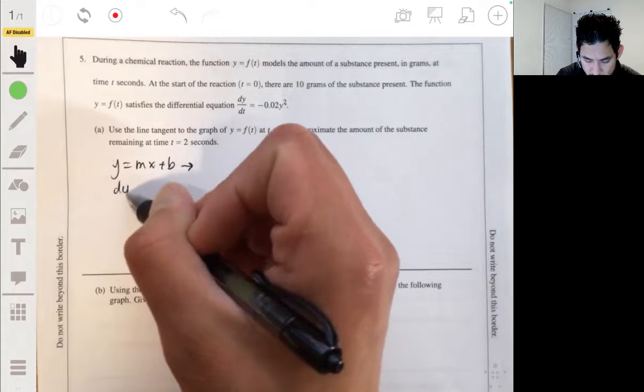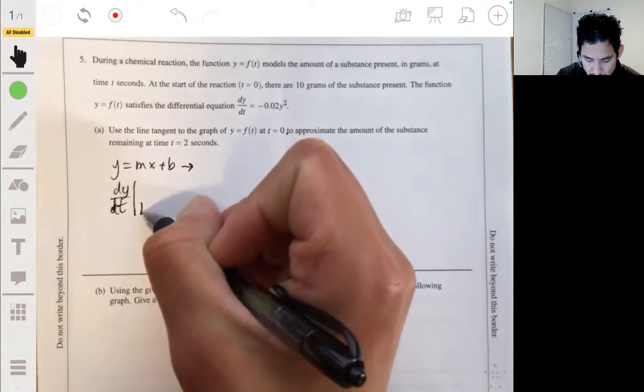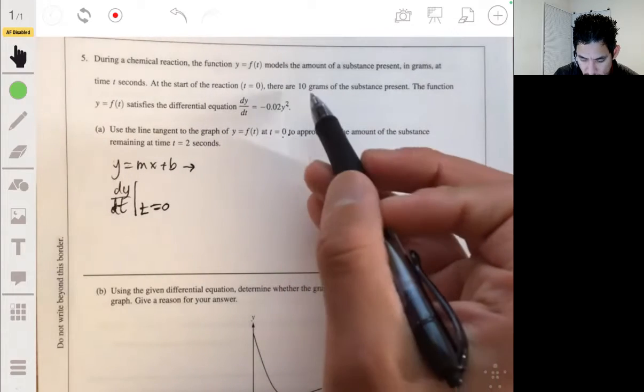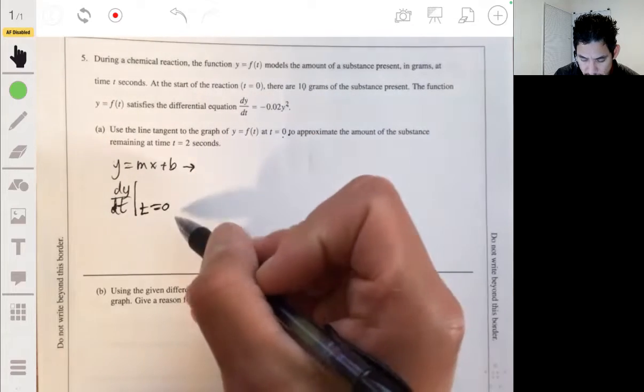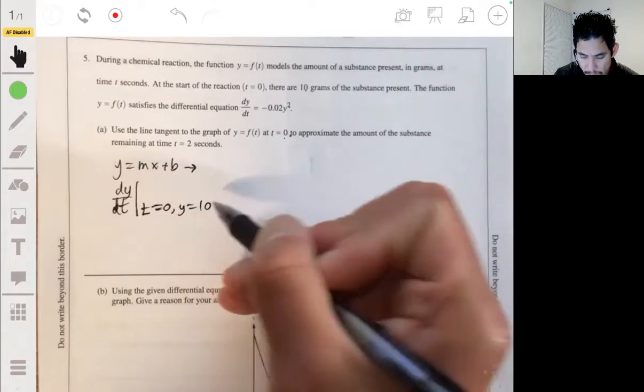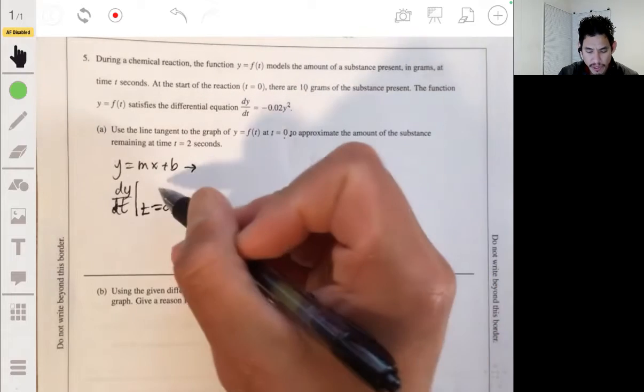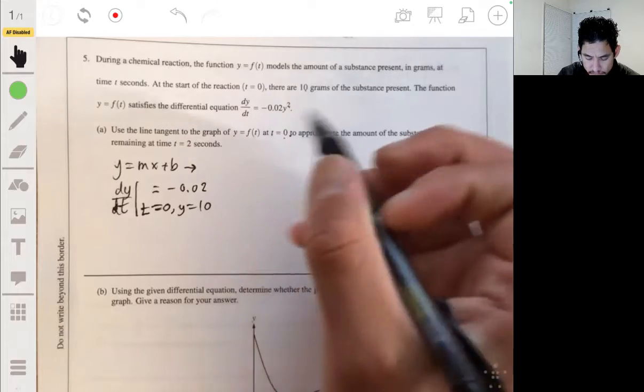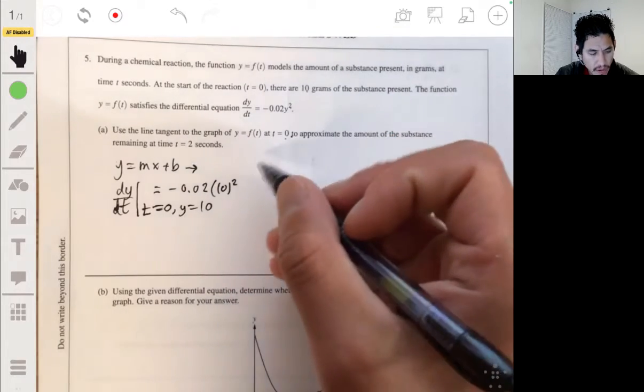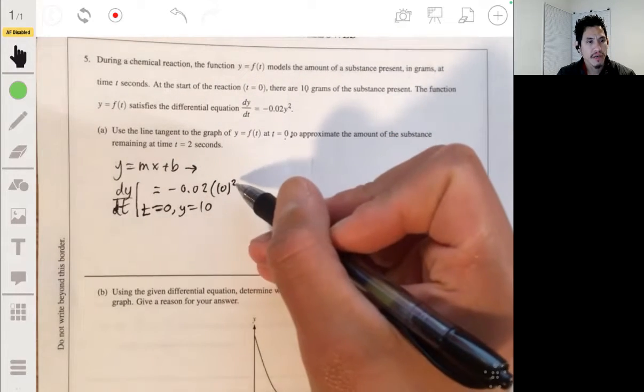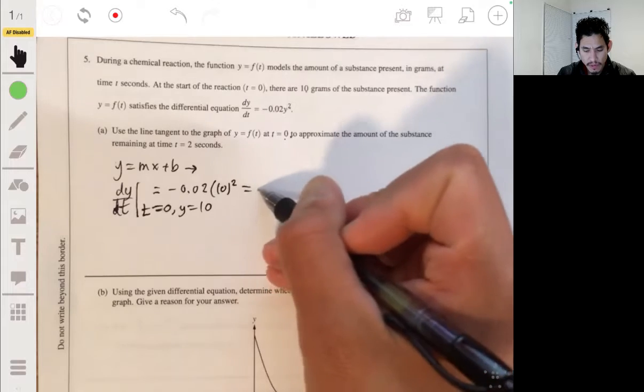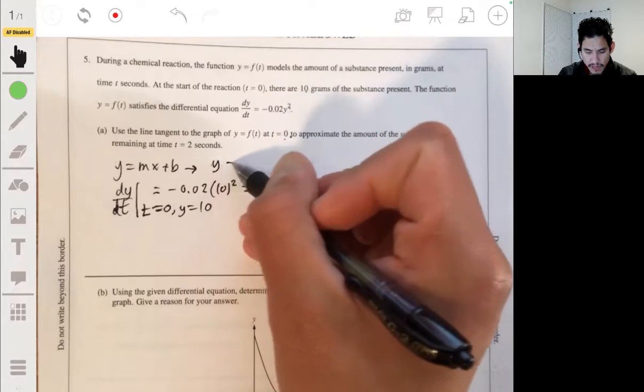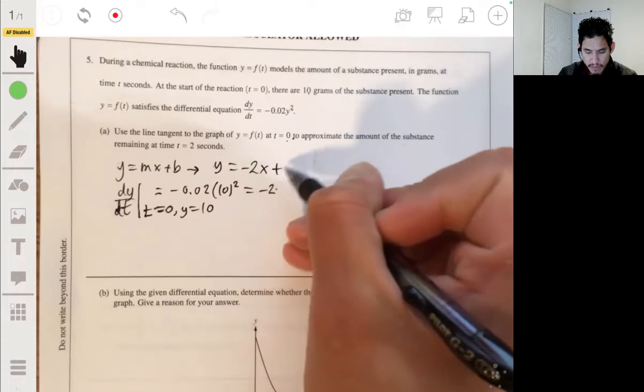So dy dt at t equals zero. Now, at t equals zero, y equals 10. So then this will be negative 0.02 times 10 squared, which would be negative 0.02 times 100, which would be negative 2. So from there, we can then write our equation as y being equal to negative 2x plus b.